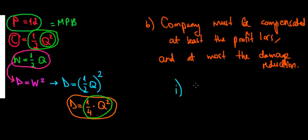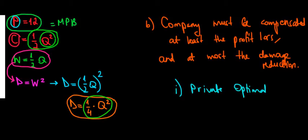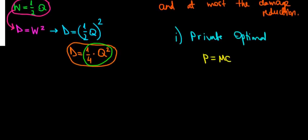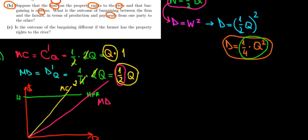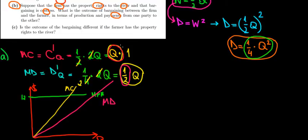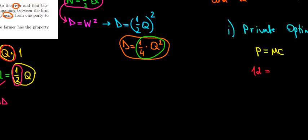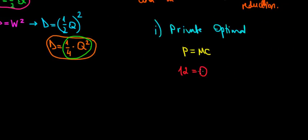Let's start with the private optimal case. Under private optimal, the condition is that price equals marginal cost — without taking into account the marginal damage. The price is set at $12, so we have 12 equals the marginal cost we calculated previously, which was equal to Q. So 12 equals Q — that's the optimal quantity under private production.